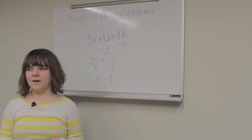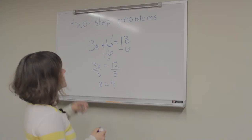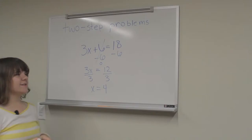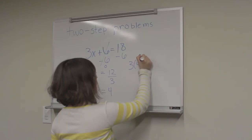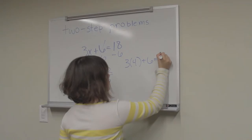Whenever you're doing a math problem, it's important to check your work. And in order to check a two-step problem, you need to plug whatever you got for x back into the equation. So in this case, we would write 3 times 4 plus 6 is equal to 18.